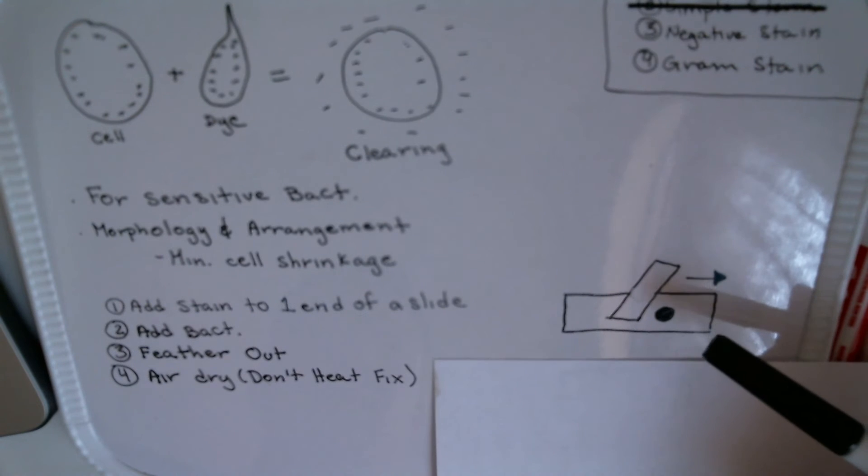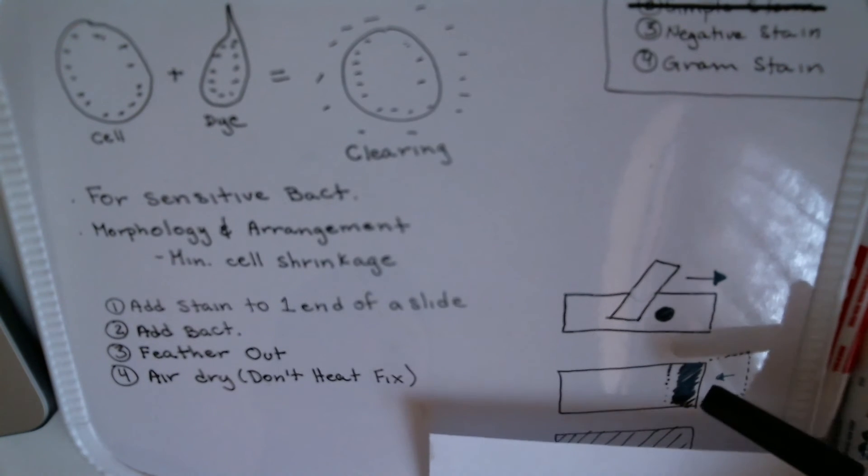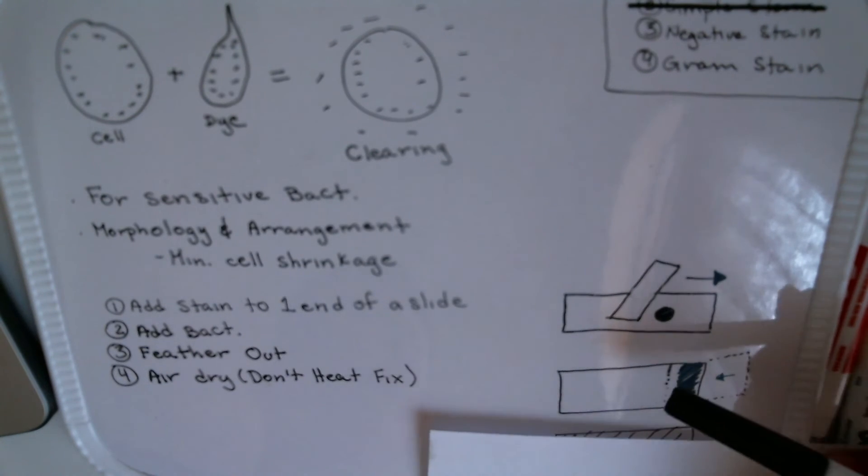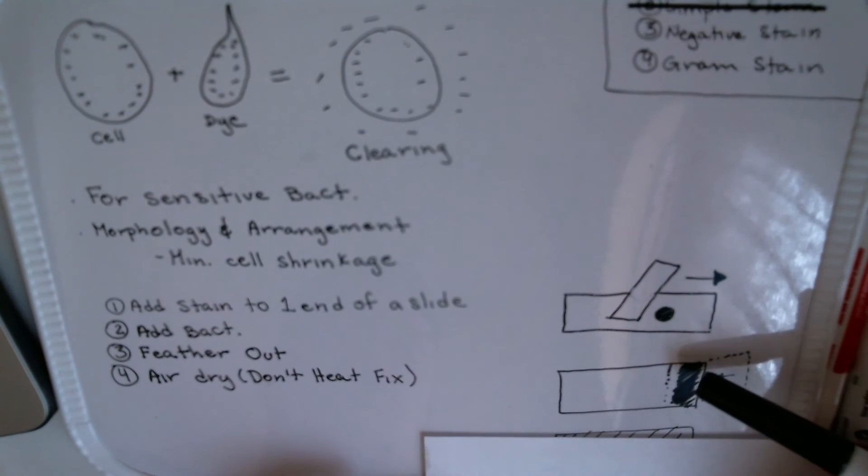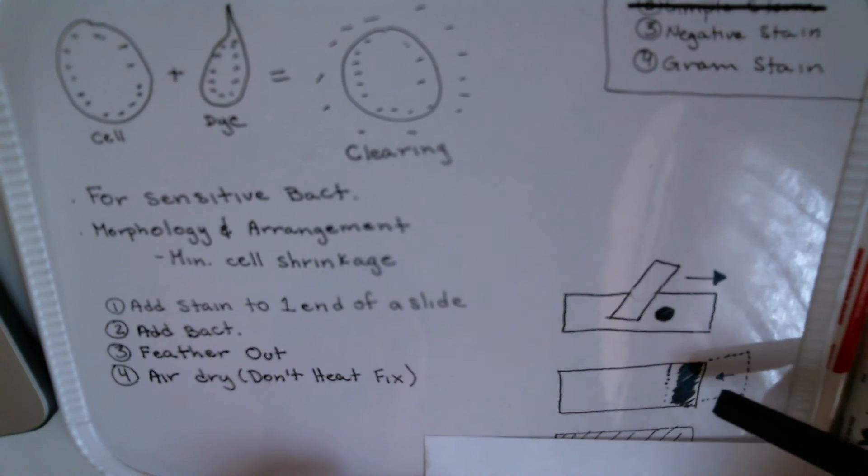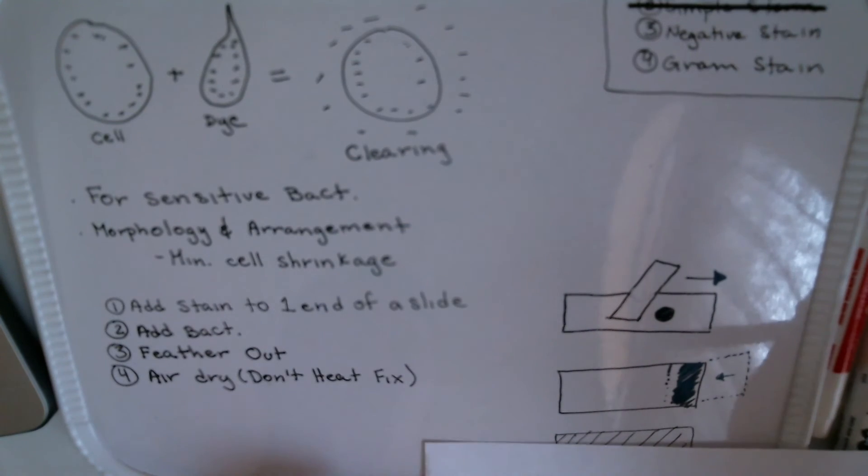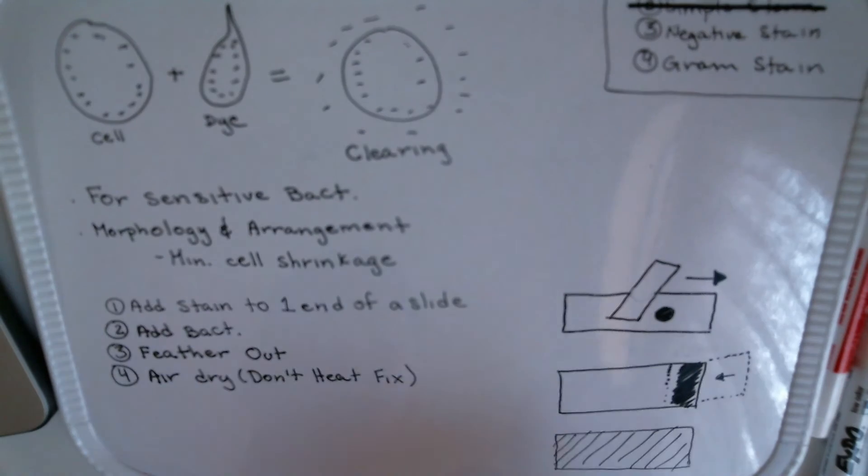We're going to take another slide and press it against the slide that has the bacteria and the dye, pull it back to the edge of the slide until it runs to the edge. As it does that, we're going to push the slide forward with our other hand, and what we do is create a very thin one-cell-thick layer of the dye and the bacteria.